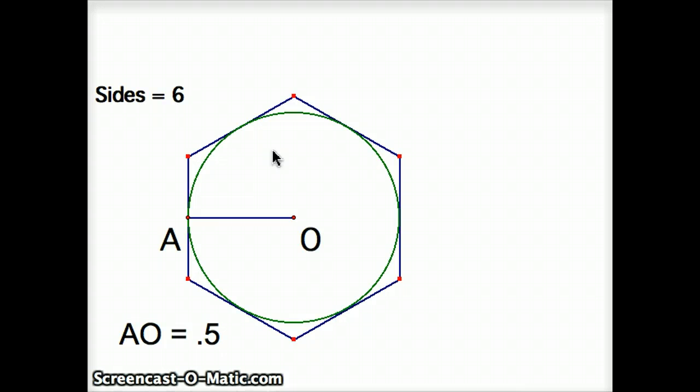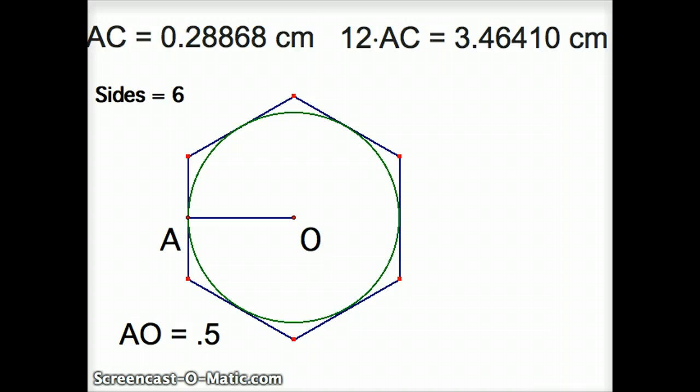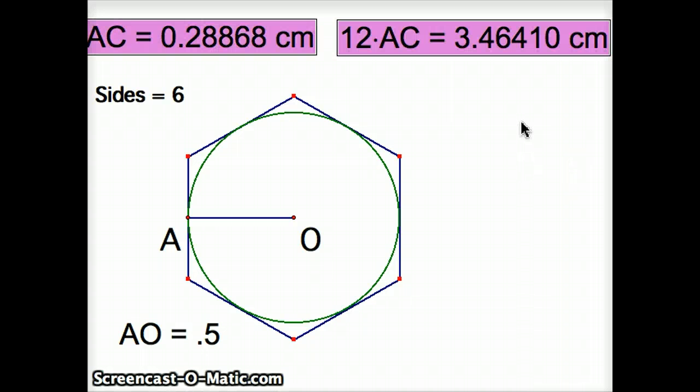Well, to approximate the circumference of this circle, he drew a hexagon, a regular hexagon, circumscribed around this circle. And he was able to calculate it out using geometry, and I'll show you the details of this in a little bit, but he was able to calculate out the perimeter of this hexagon to be exactly 3.46, and he would say that pi is less than that.